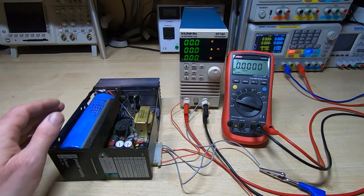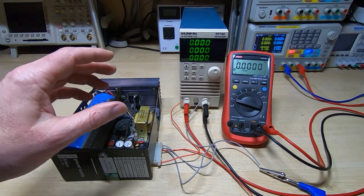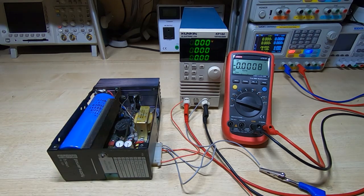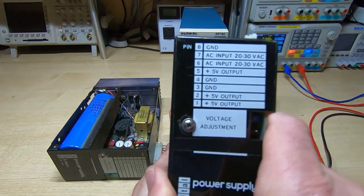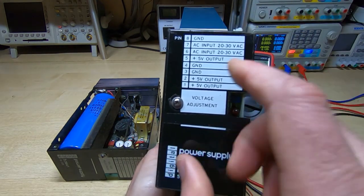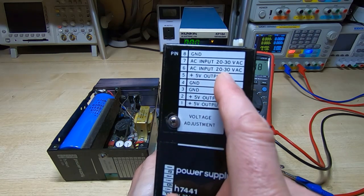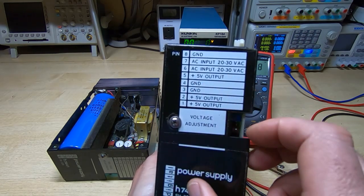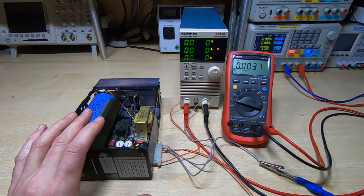They're pin-out compatible so you can replace one with the other, but electronically they're very different internally. The input of these is written on the bottom of the units. It says input is AC 20 to 30 volts and the output's 5 volts, so these are 5-volt 32-amp regulators.